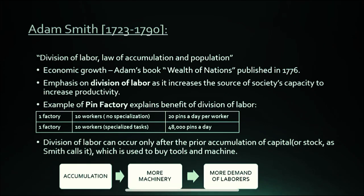To understand this, let's take a look at the pin factory. There is a factory where there are 10 workers who are all doing the same work — there are no specialised tasks. So one worker is making 20 pins in one day. Now if you have 10 workers who each have their own specialised task, meaning you have division of labor, productivity in one day increases significantly. You can see the difference in productivity due to division of labor.